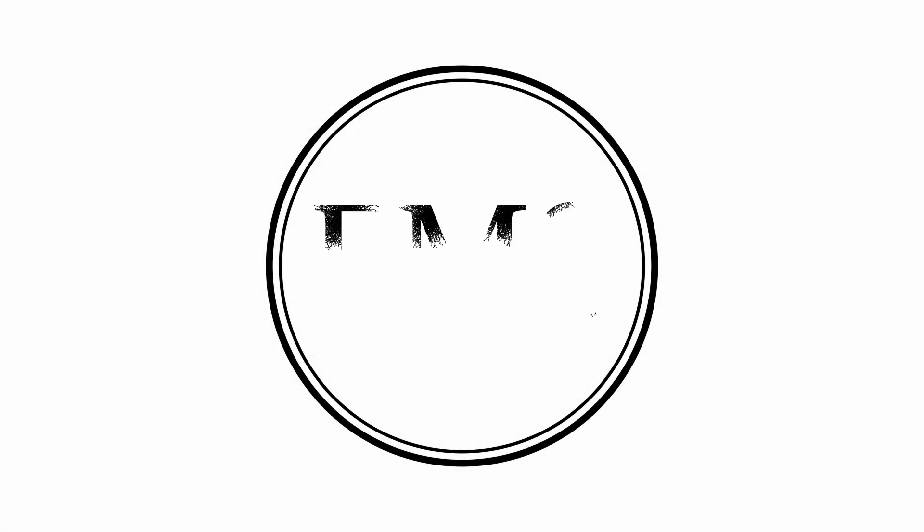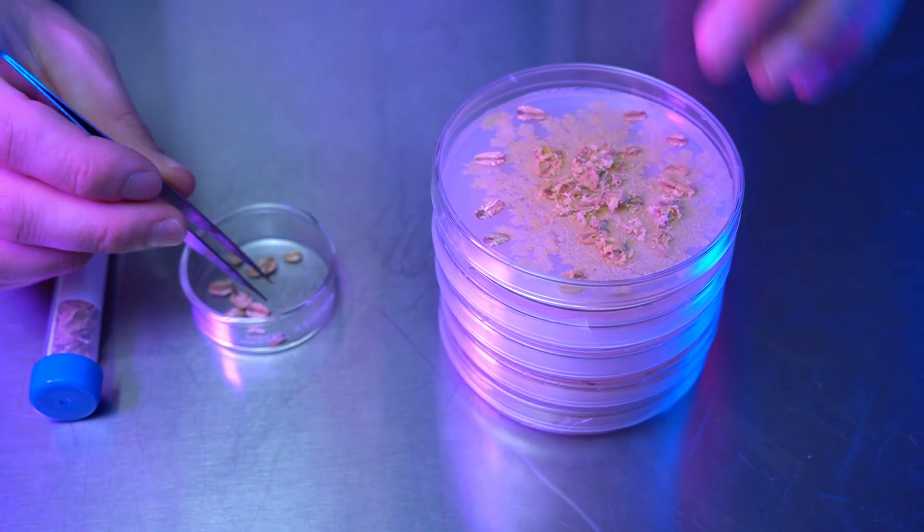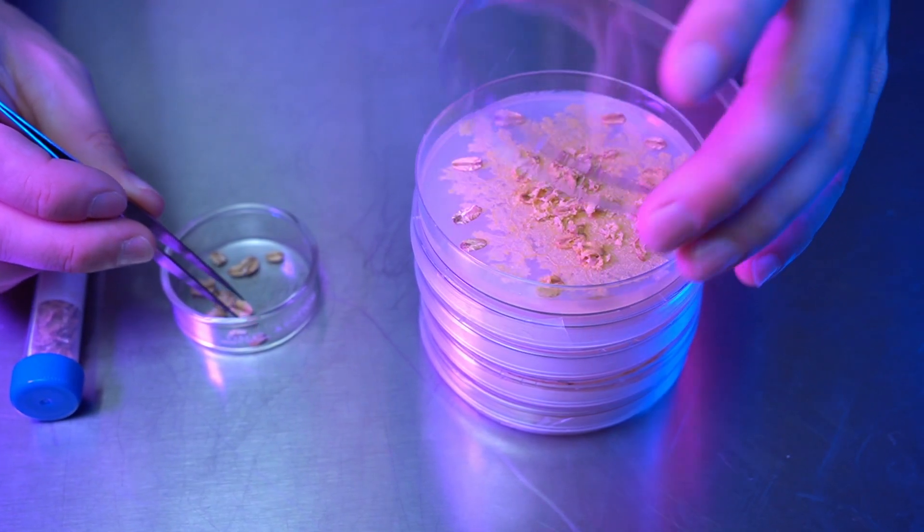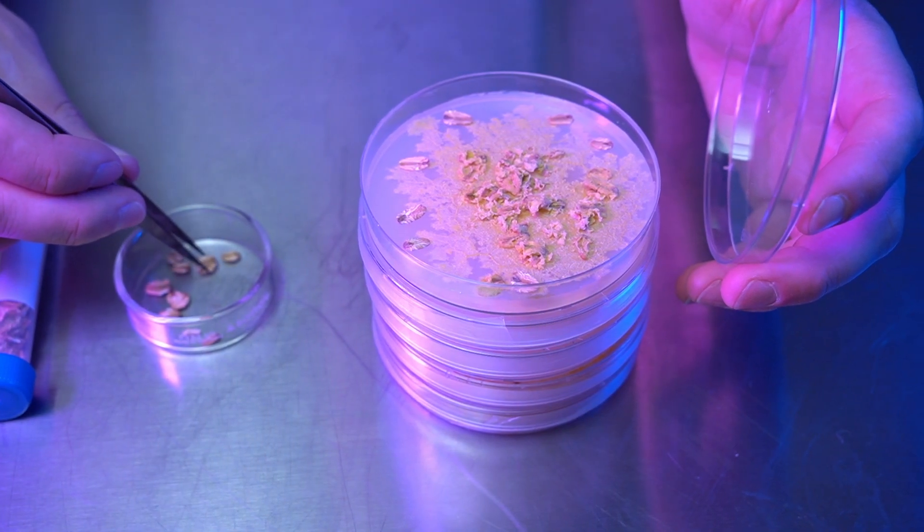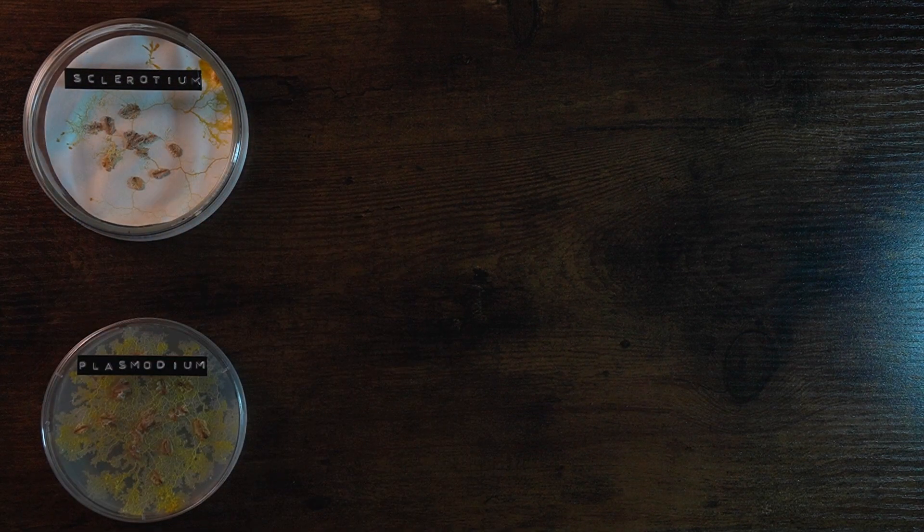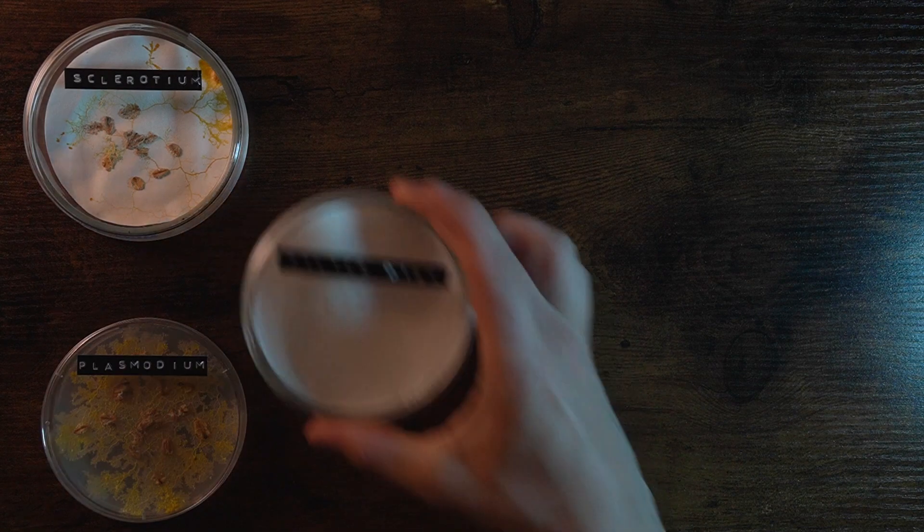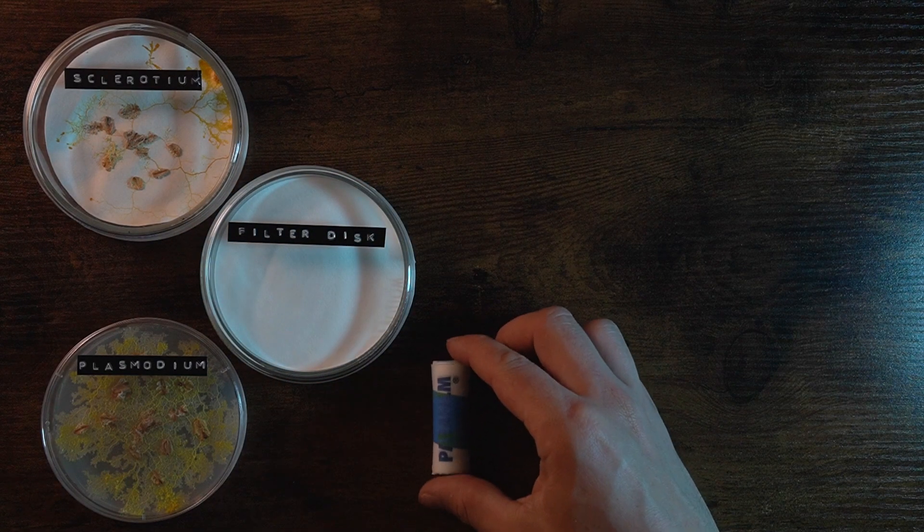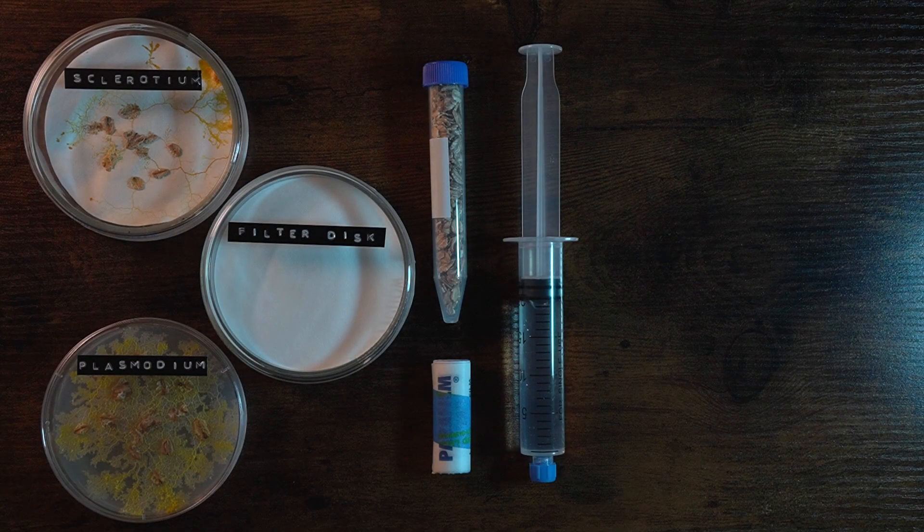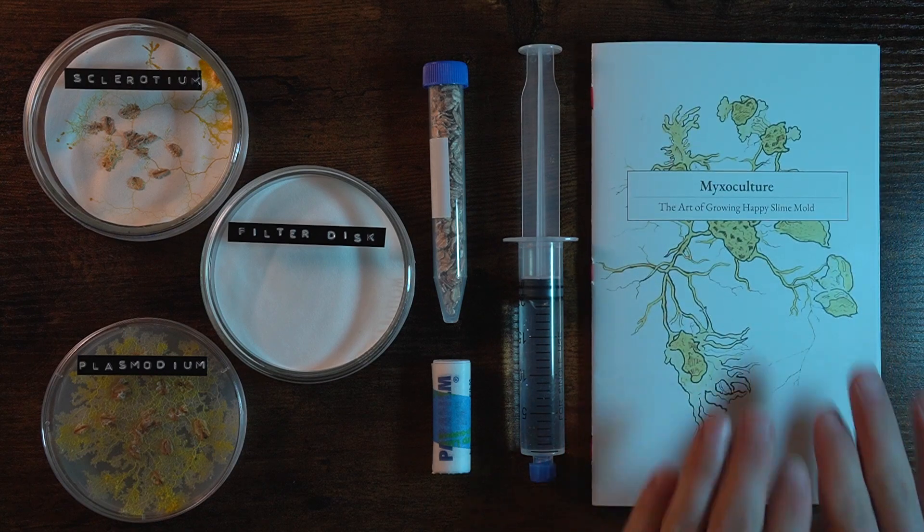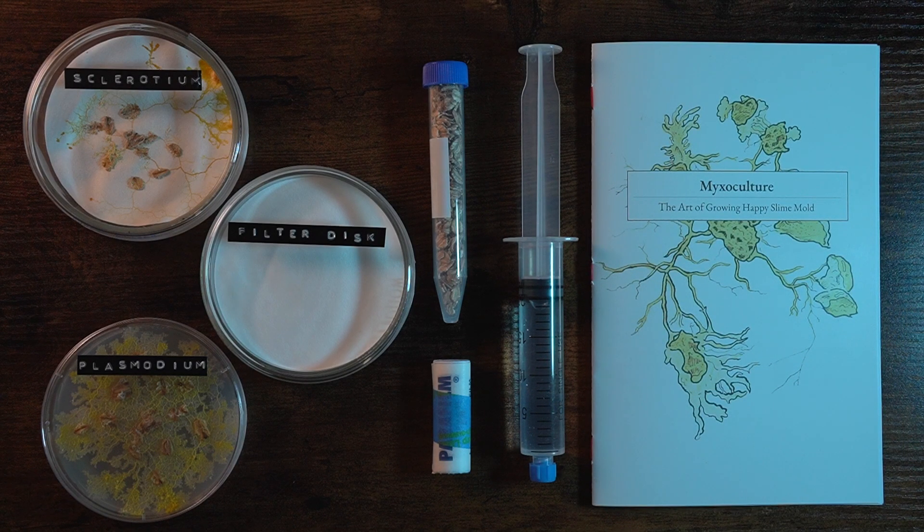Brought to you by the Fresno Mycology Society. If you would rather not try and source your own wild slime mold plasmodium, I sell culture kits with everything you need to get started. The kit contains a live plasmodium of Physarum polycephalum, a dehydrated sclerotium of the same species, a petri dish with filter papers, a roll of parafilm, a tube of sterilized oats, and a syringe of sterile water, as well as an illustrated manual that describes all we will be discussing in this video, and much more.